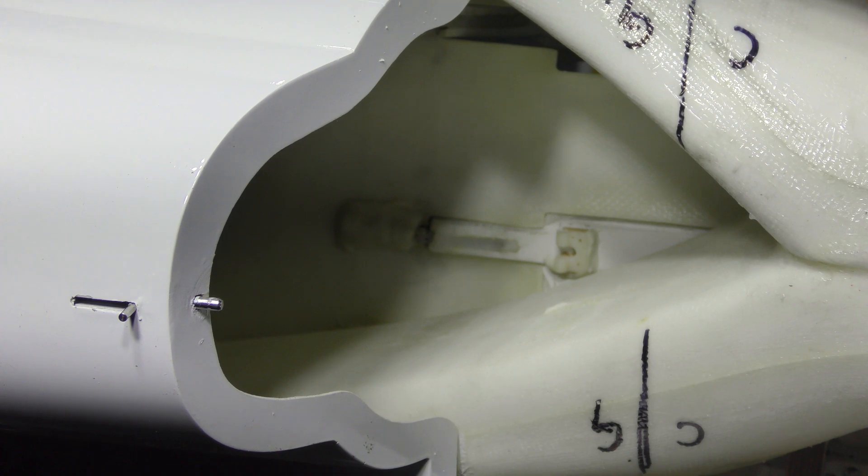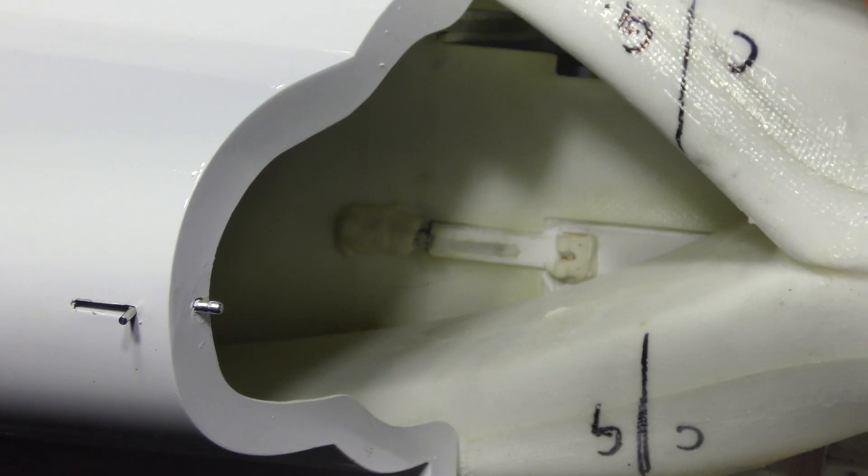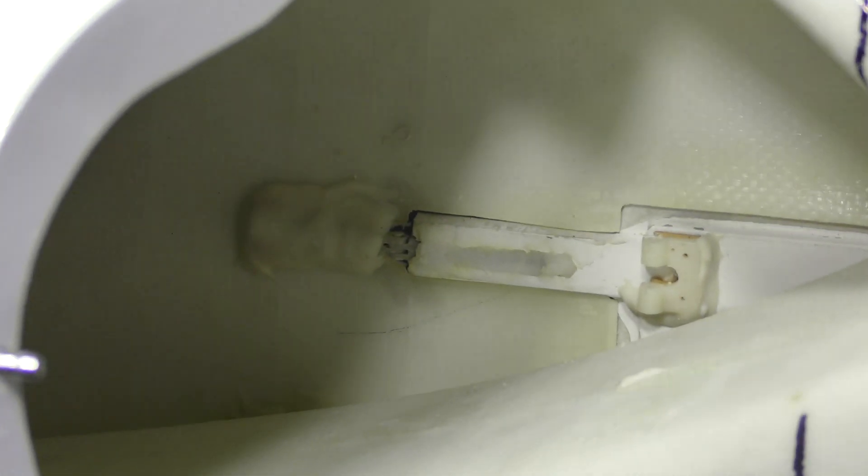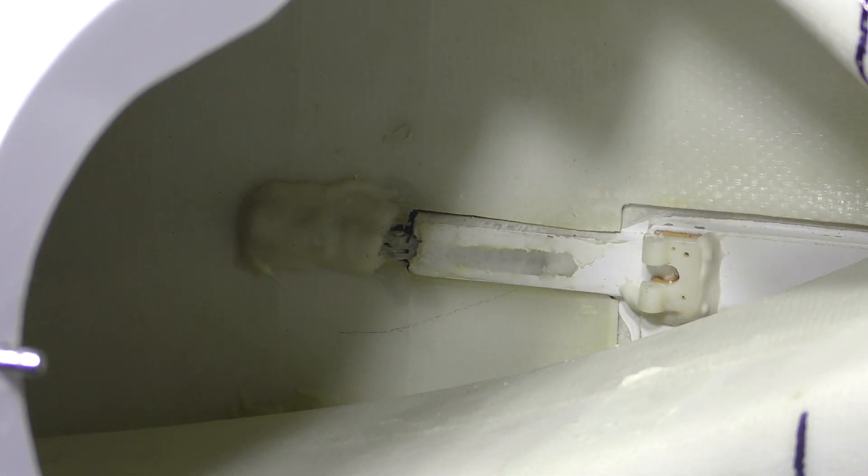So previously the cylinders used to sit right here and on the opposite side and you can even see that hinge, which I need to remove and move to the other side.